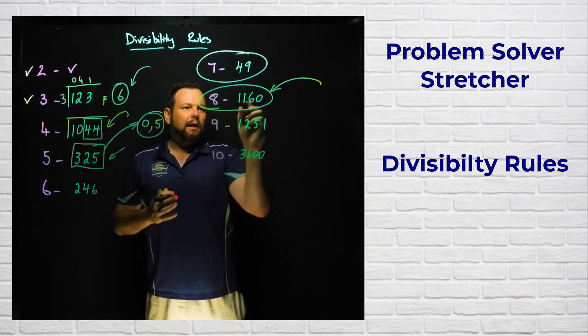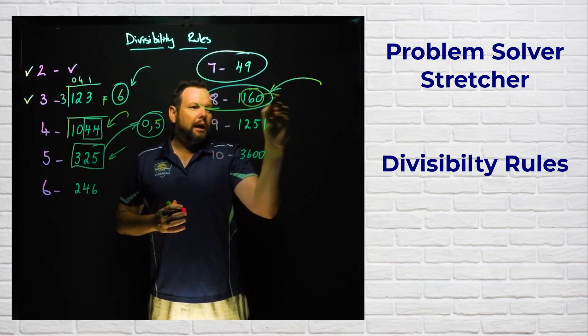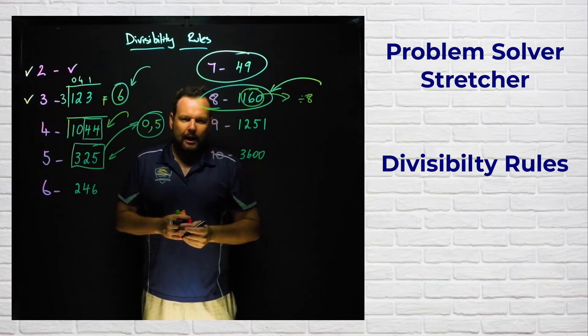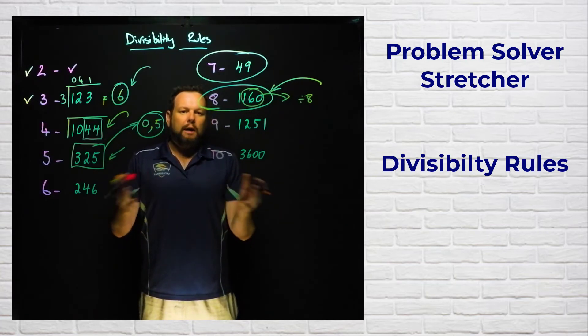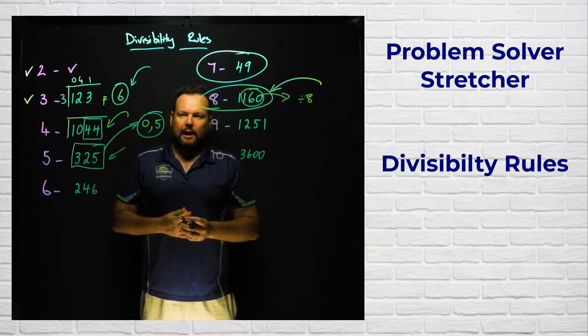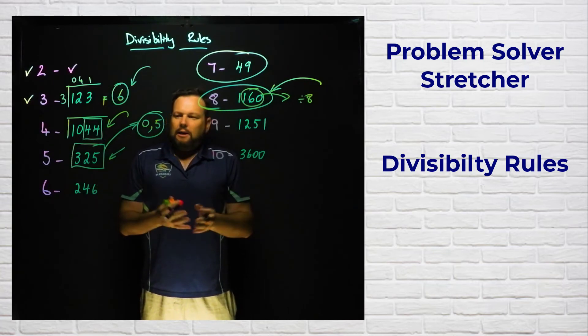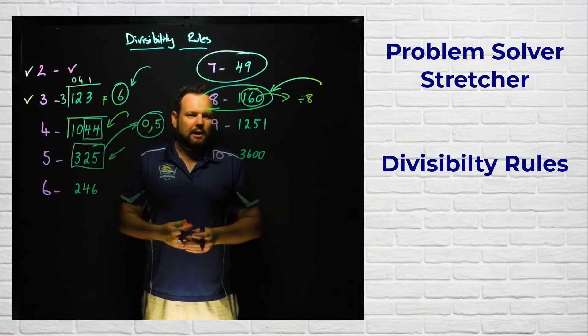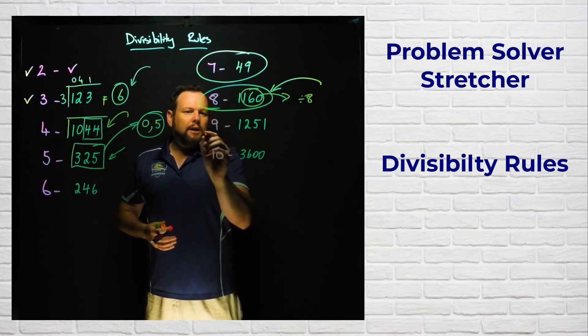That rule for eight is if the last three digits are divisible by eight. If I can divide those last three digits by eight, it means that the whole number is divisible by eight. So you really would only use it if your number is longer than three digits.